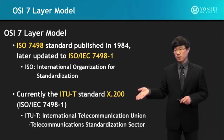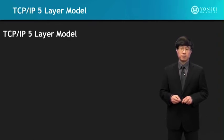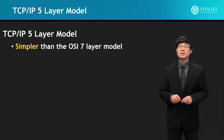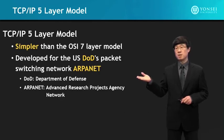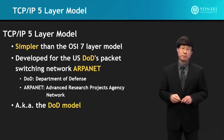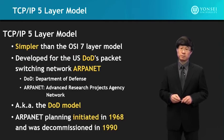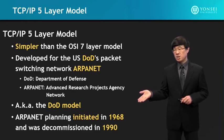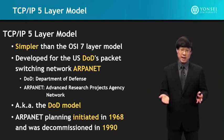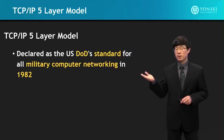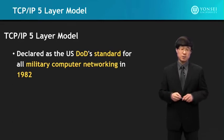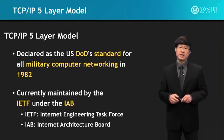The ITU-T stands for the International Telecommunication Union Telecommunication Standardization Sector. For the TCP/IP 5-layer model, it's a simpler model compared to the OSI 7-layer model. It was developed for the United States Department of Defense packet switching network called ARPANET, so it's also called the DOD model. ARPANET planning initiated in 1968, was decommissioned in 1990, and was declared the US Department of Defense standard for all military computer networking in 1982. Currently it's maintained by the IETF under the IAB.